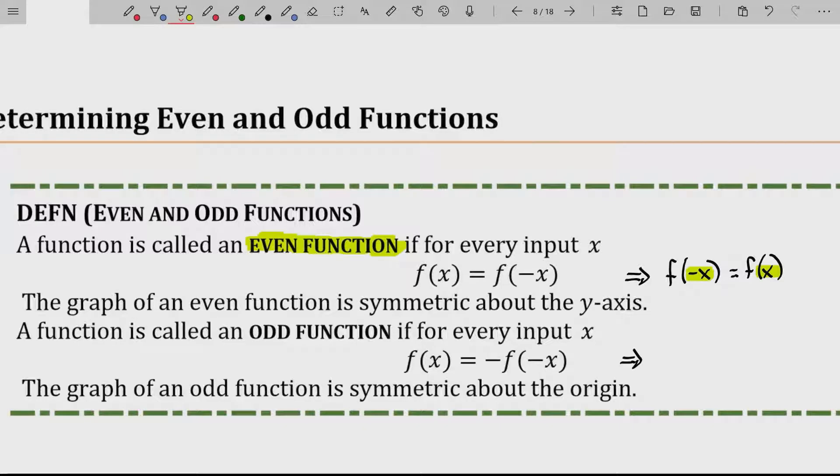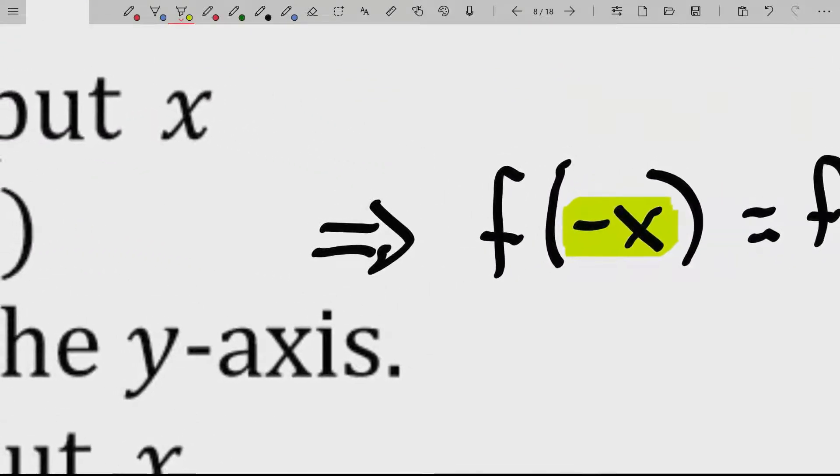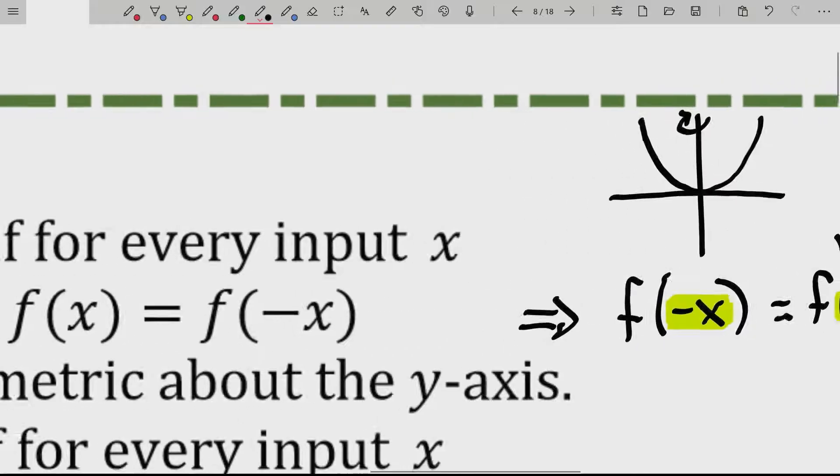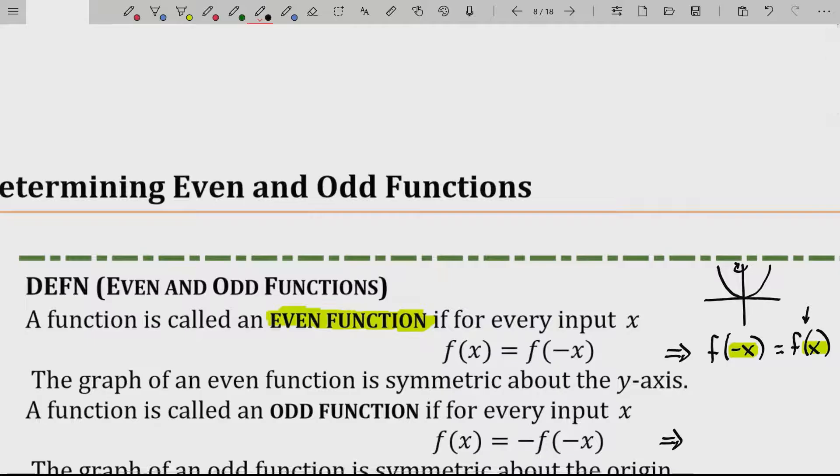Since f of x equals f of negative x, and we just reviewed the effect of a negative on the interior of your function that rotates your graph about the y-axis, well, since the graph rotated about the y-axis, if you have a graph of a function and when you rotate it about the y-axis, if it ends up looking just like the regular function, then it must be symmetric about the y-axis. The graph of an even function is symmetric about the y-axis.